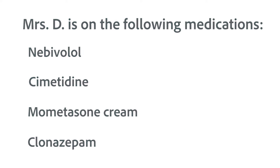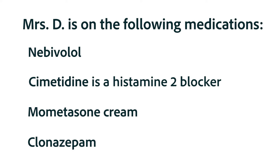Let's try that right now. You're looking at Mrs. DiGero's chart and notice she's on a list of medications. Can you identify any members of a particular drug class in that list? Cimetidine ends with T-I-D-I-N-E, so it is a histamine 2 receptor blocker, or H2 antagonist, that decreases stomach acid.